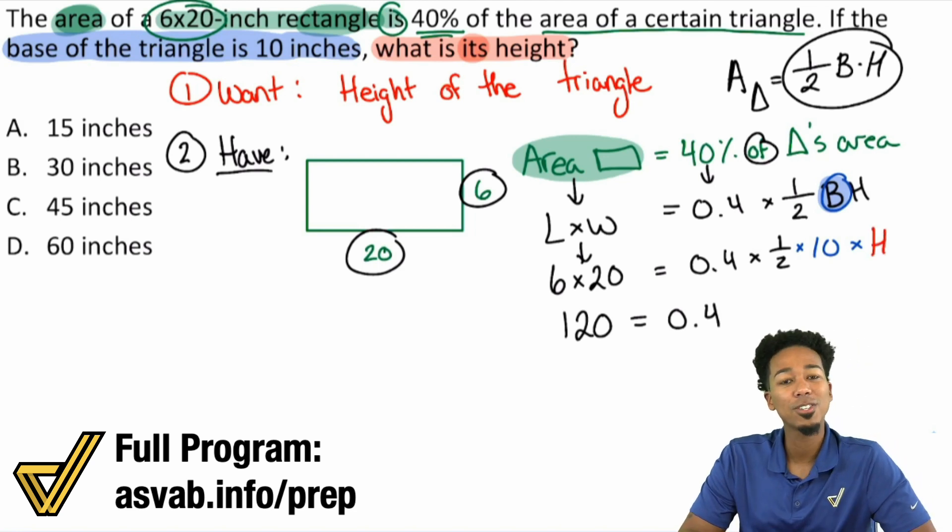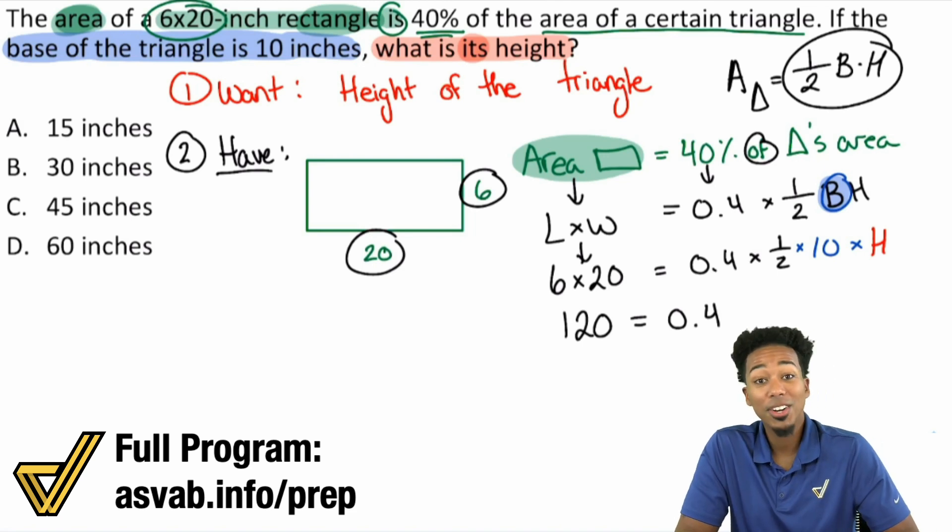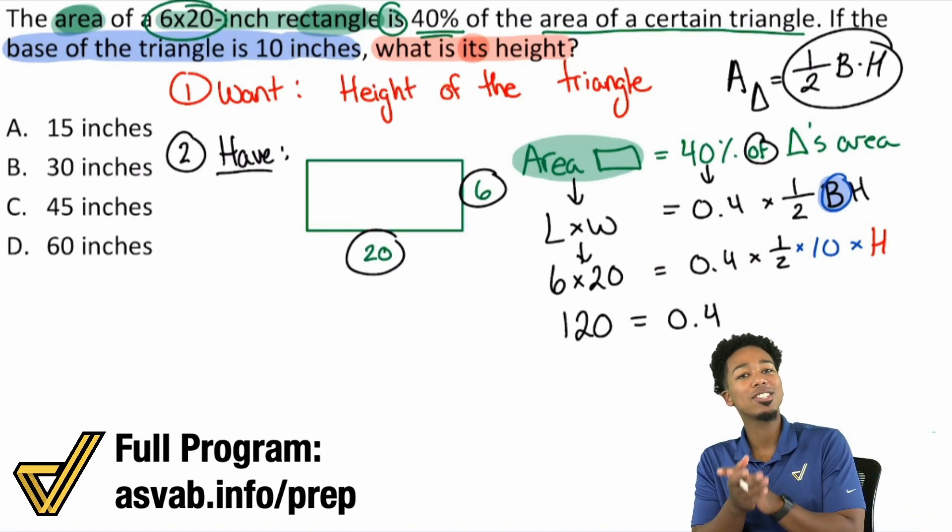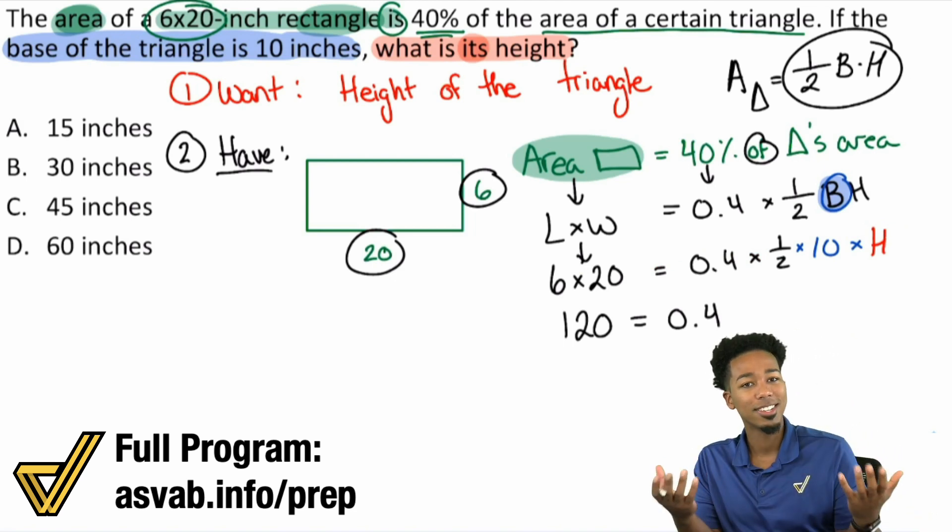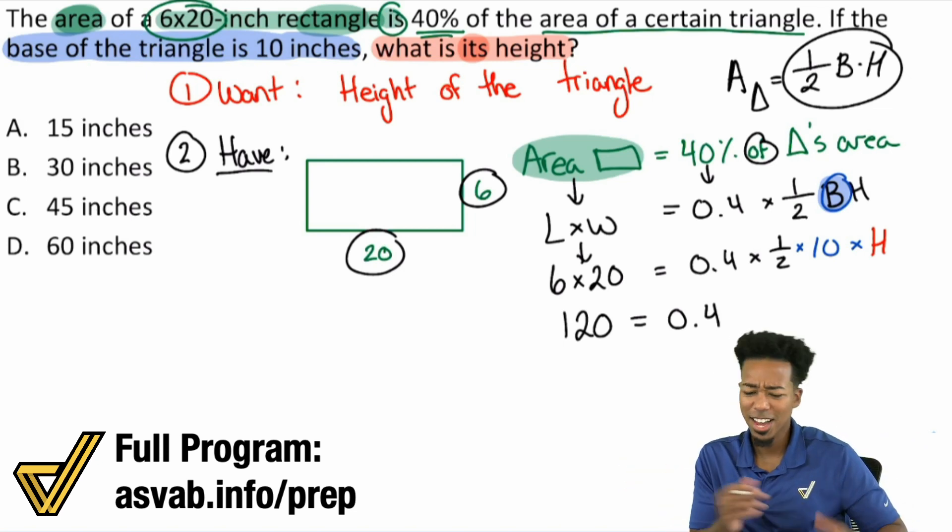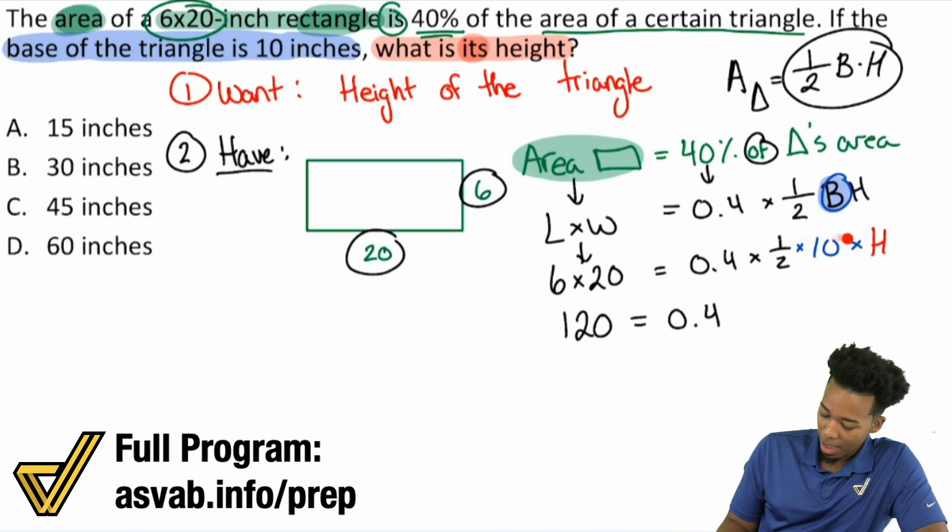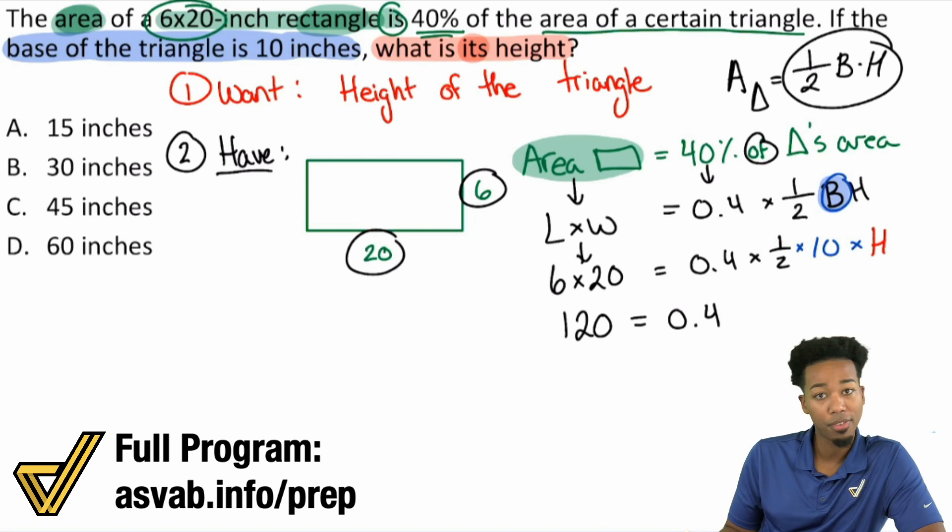Notice we have a full-on equation here with only one variable to look for. When you have an equation with one variable, that's nice and easy. We've got to use some techniques here and there, but we can definitely figure this out. Let's figure out what half of 10 is. Half of 10 is five.